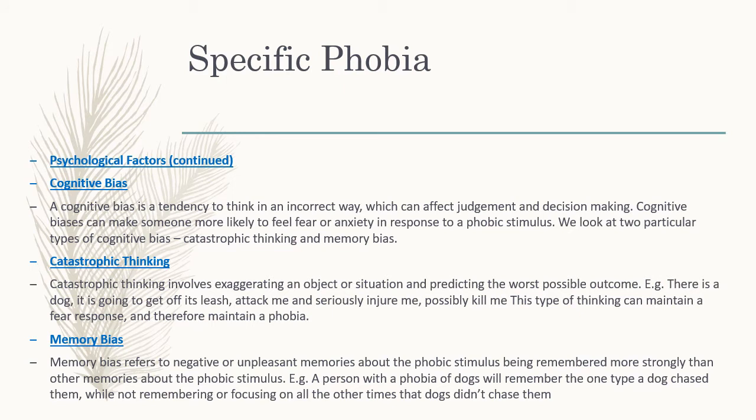Continuing with psychological factors — cognitive bias is where you tend to think in an incorrect way, which can affect your judgment and decision making. Cognitive bias can make someone more likely to feel fear or anxiety in response to a phobic stimulus. There are two particular types to look at: catastrophic thinking and memory bias.